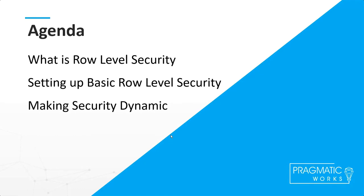The agenda for this presentation: we're going to learn what row-level security is, and we're going to cover a basic setup — adding individual fields, hard-coding values — and then making it more dynamic. With basic hard-coded security you assign people to specific roles, but that's not scalable once you have hundreds or thousands of employees, or when someone changes roles in your company. So we'll cover dynamic role assignment as well.